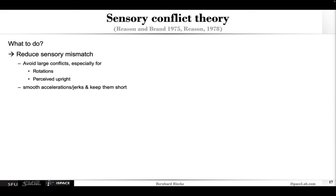So what can we do about this based on the sensory conflict theory? Well, of course, the best would be to really completely reduce or eliminate any kind of sensory mismatch. If that's not possible, try to avoid larger conflicts, especially for rotations when people wear a head mounted display — these are very critical — and also any issues related to messing with the perceived upright. Smoothing, acceleration, and jerks: not having a lot of them can also help a lot.